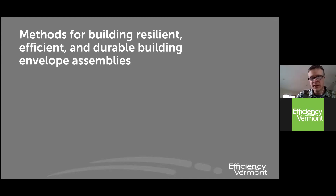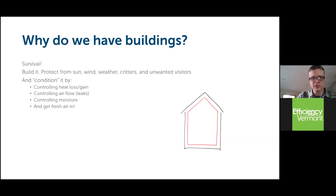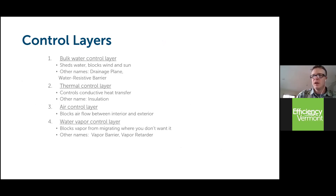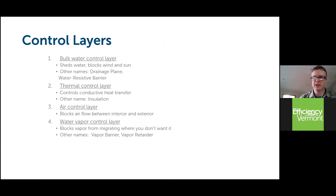As we're putting the building together, what are our options for efficient and durable building envelope assemblies? We're defining the building envelope to protect the humans living in it — create a healthy microclimate, control air flows, heat loss and gain, moisture, and get good indoor air quality. We have different control layers to impact those needs: controlling bulk water from the exterior, the thermal control layer which is your insulation, your air control layer — the air barrier — and vapor control.